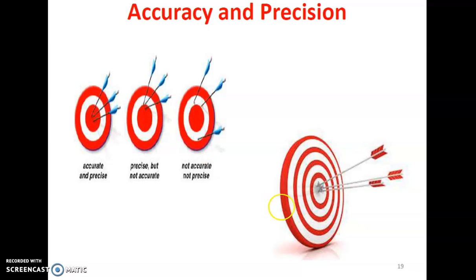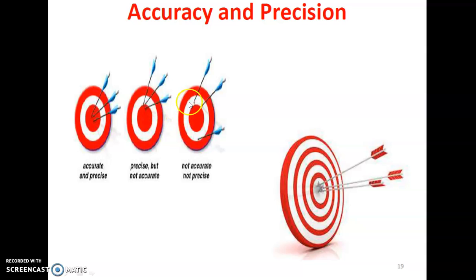In the second case, it is precise but not accurate — it is not on the target. It is not accurate, but it is precise because it shows the consistency of the measuring process; for every reading, it gave the same value. In the third case, it is not accurate and not precise — the readings are scattered, they are not the same, and it is not on the target.